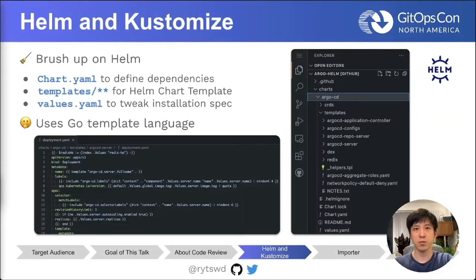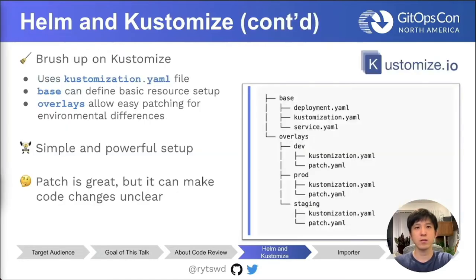Let's have a quick brush-up on Helm and Kustomize first. Helm is about its chart, and the key files are as shown here. Helm charts can be quite complex, and from the code reviewer perspective, Go template language for templates can be difficult to understand and review. Kustomize is about kustomization.yaml files to define the list of files you need, and uses base and overlays to generate a complete spec. Thanks to its patching capability, environmental differences can be handled easily. But because of the nature of the patching, it can be problematic for code reviewers as well.